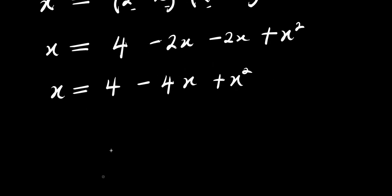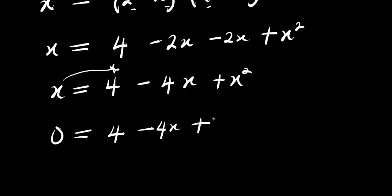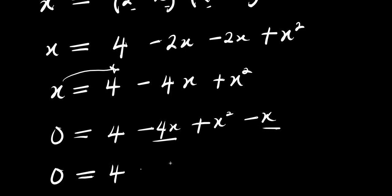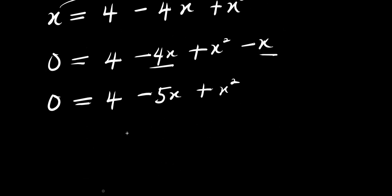Now solving for x, I can move x over here. I have 0 equals 4 minus 4x plus x squared minus x, so the x becomes negative x. From here I have 0 equals 4 minus 5x plus x squared. Rearranging this equation: x squared minus 5x plus 4 equals 0.